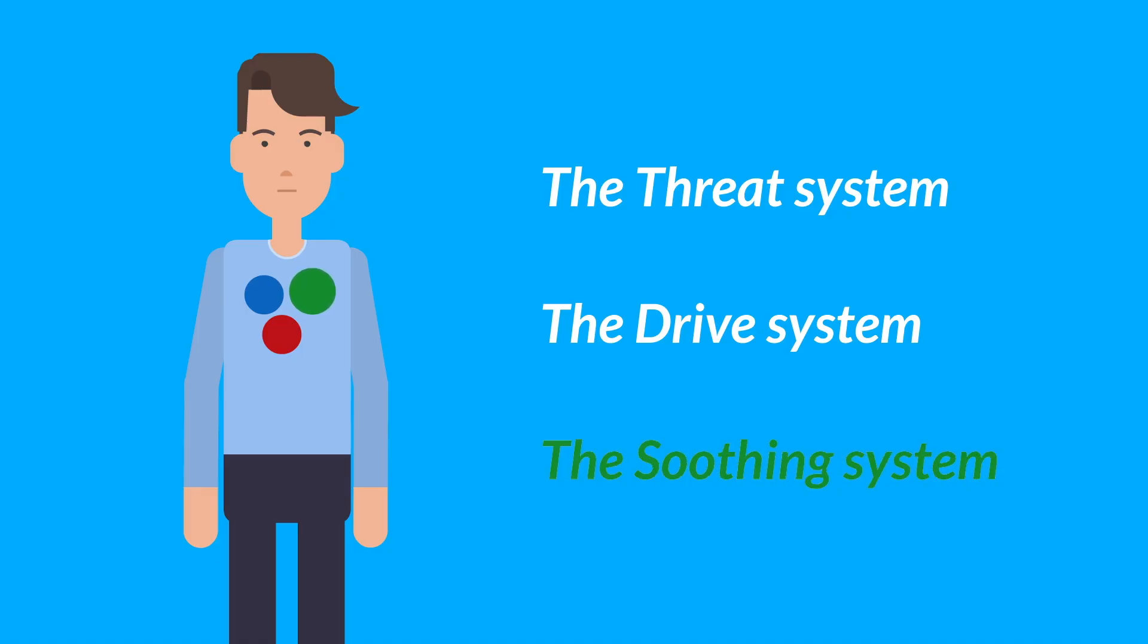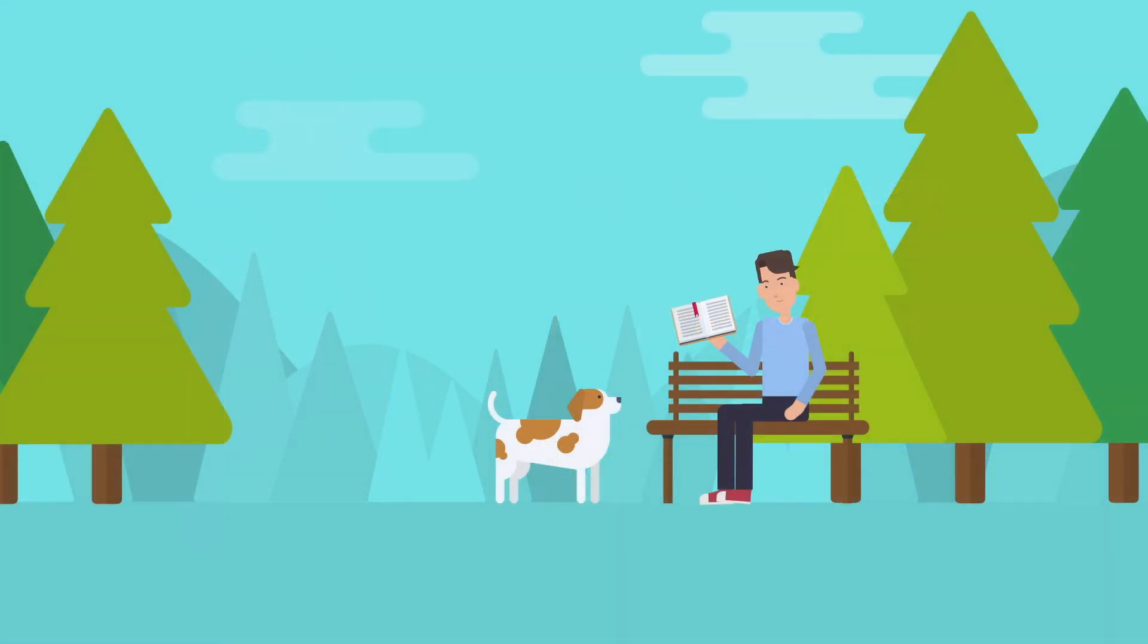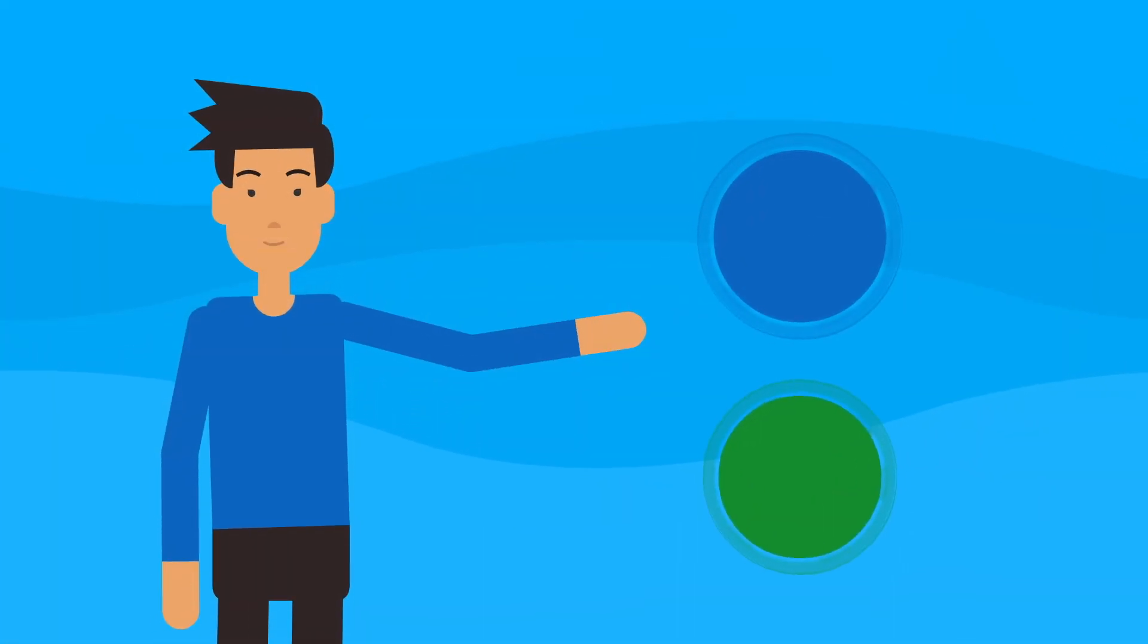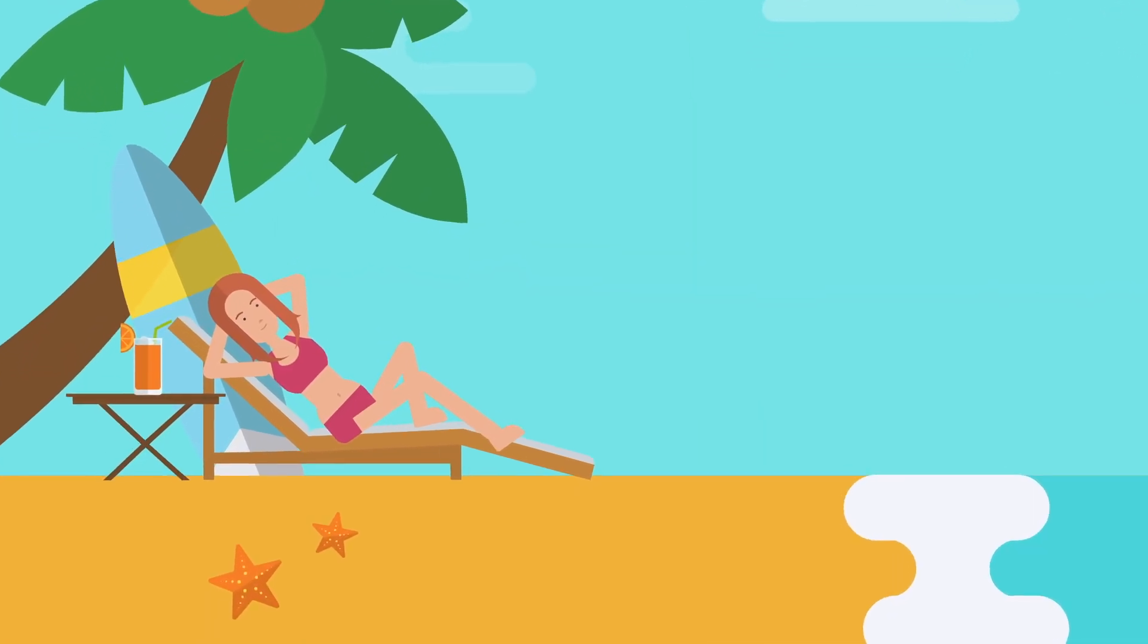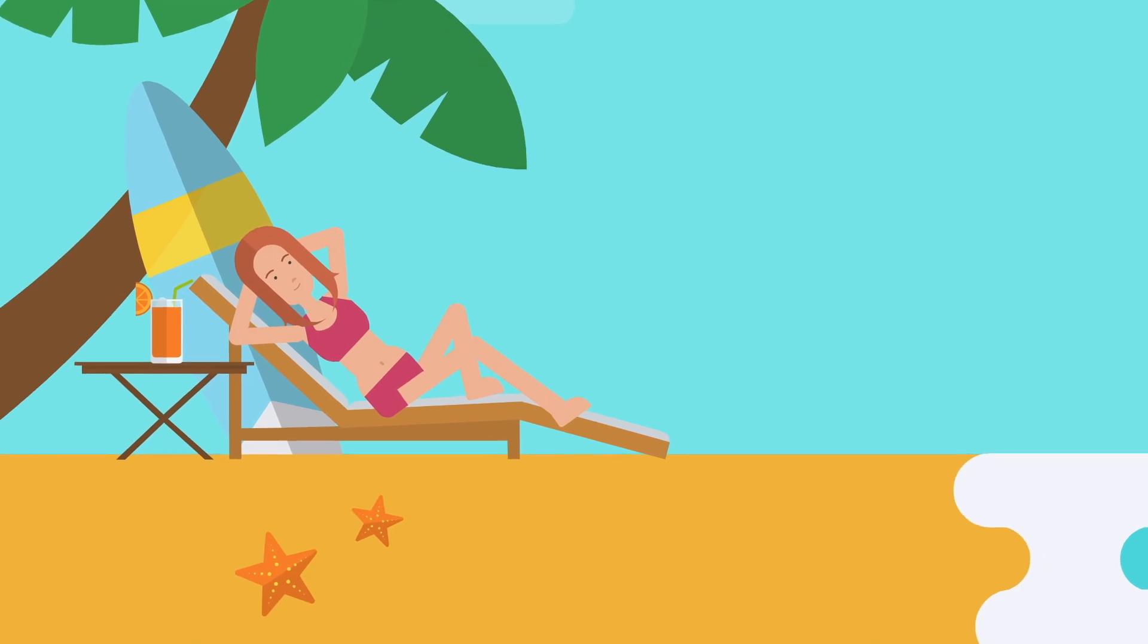The third system is the soothing system or green circle. This is also a positive emotion system but with lower energy than the blue circle. The soothing system is all about those times when we feel calm, relaxed, and content.